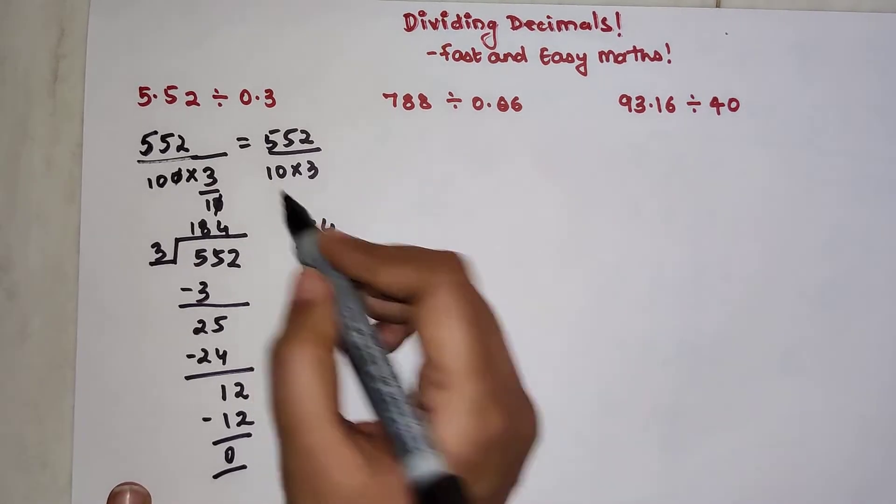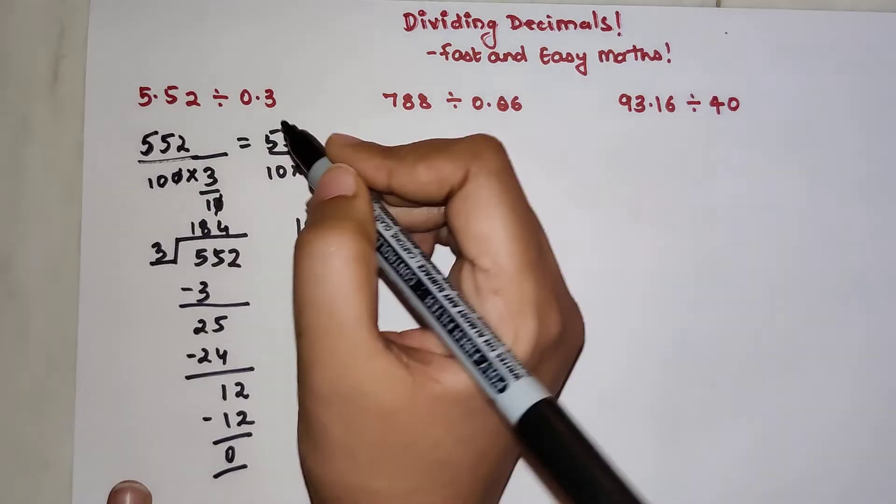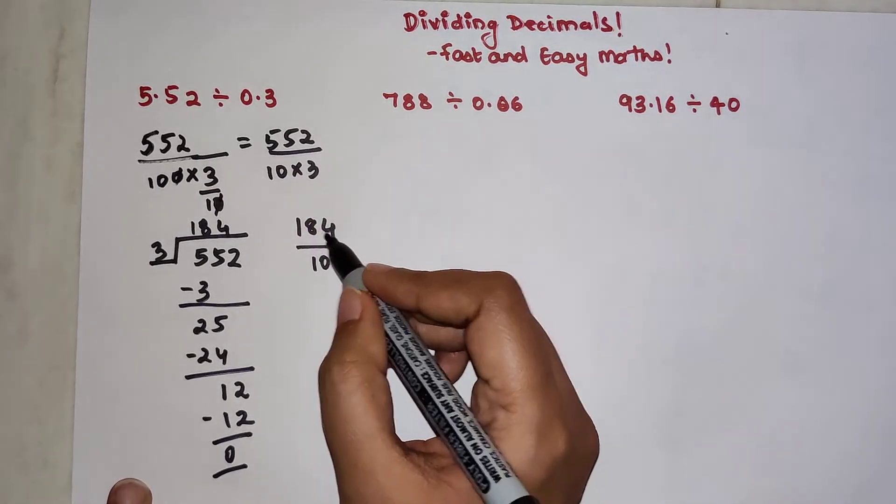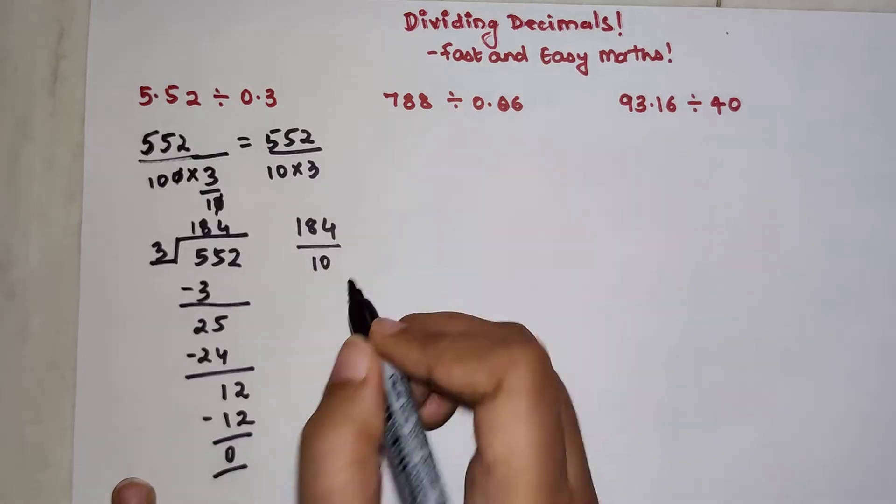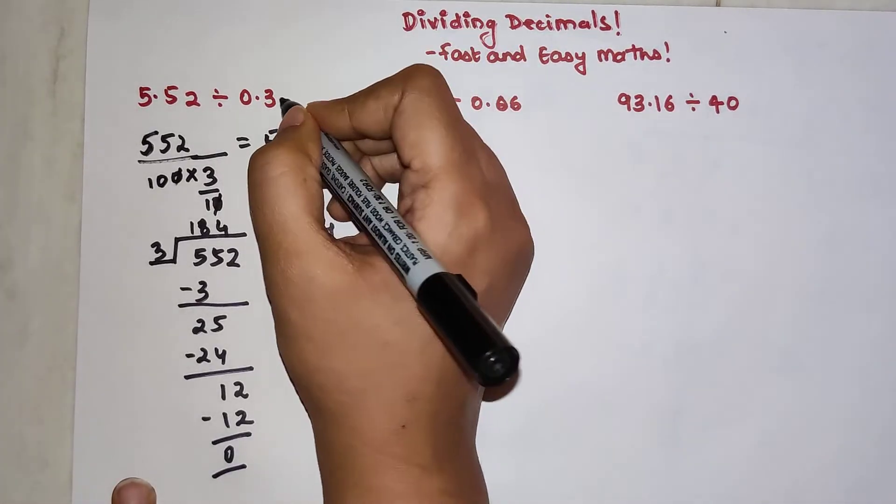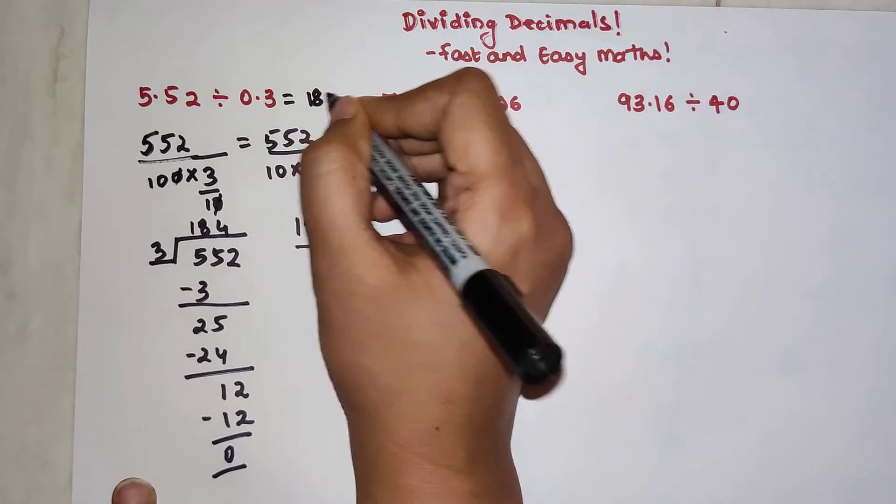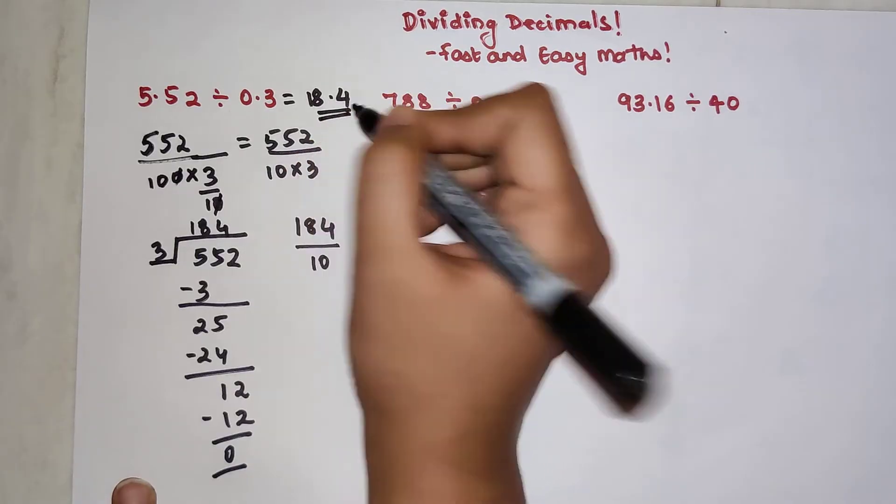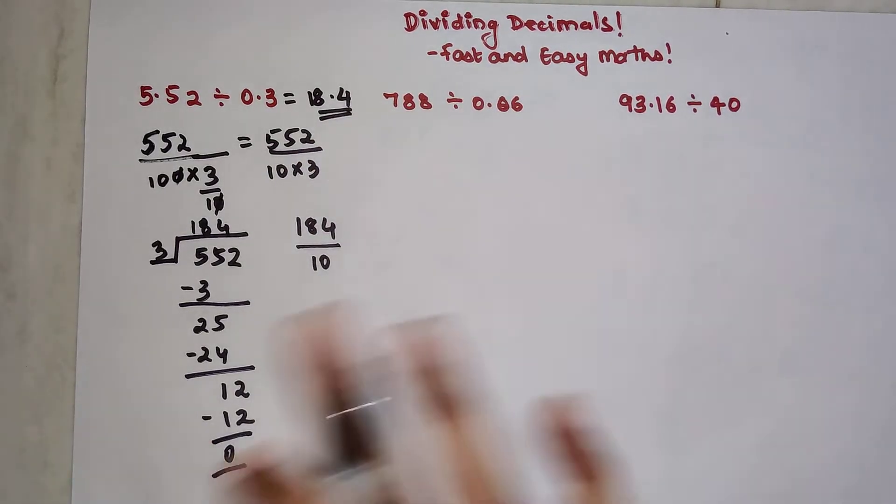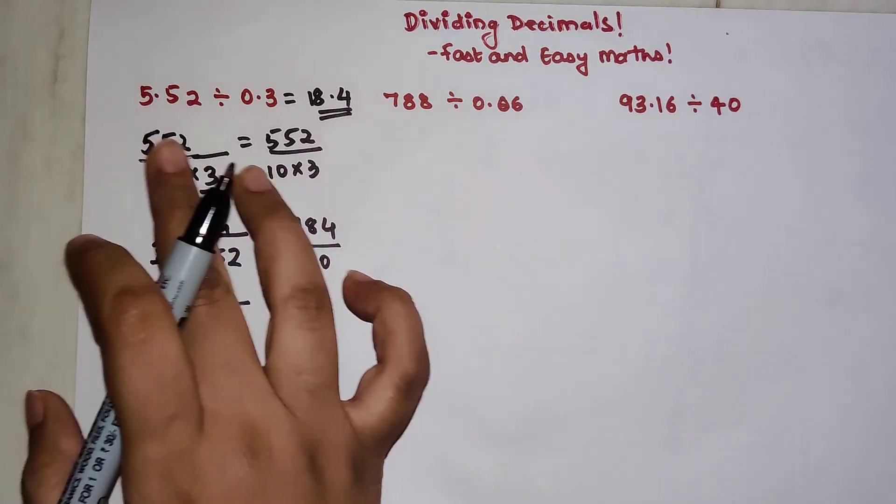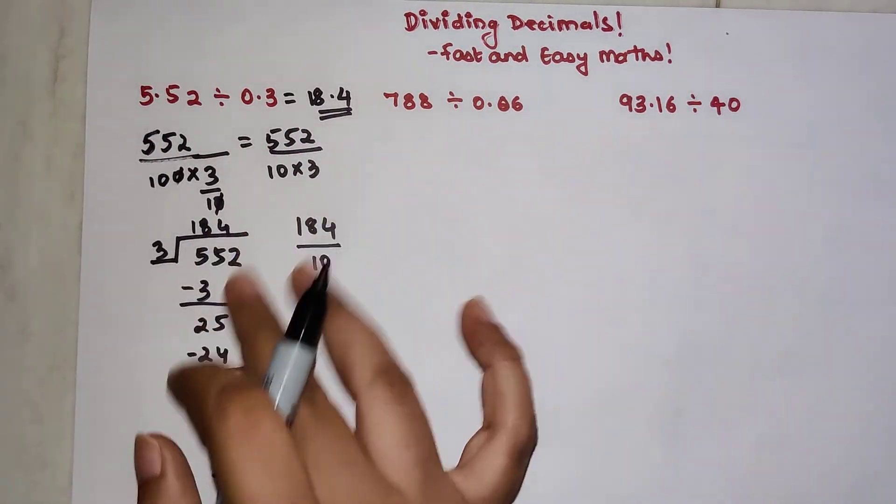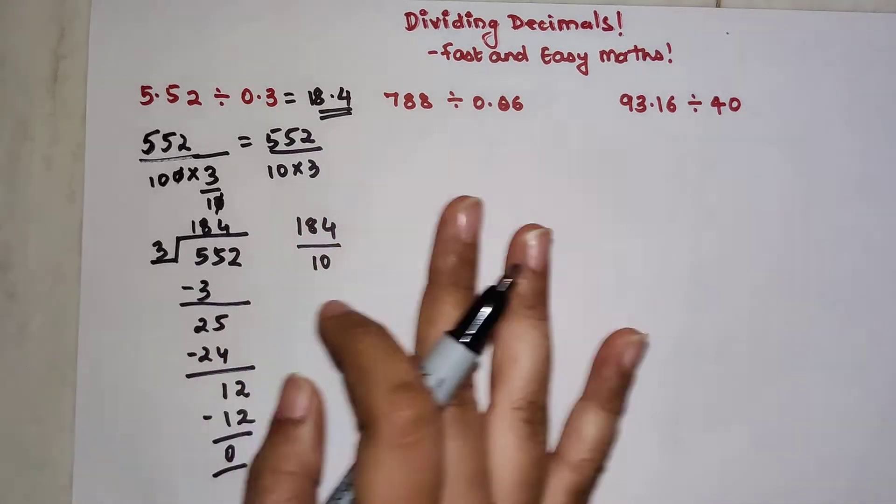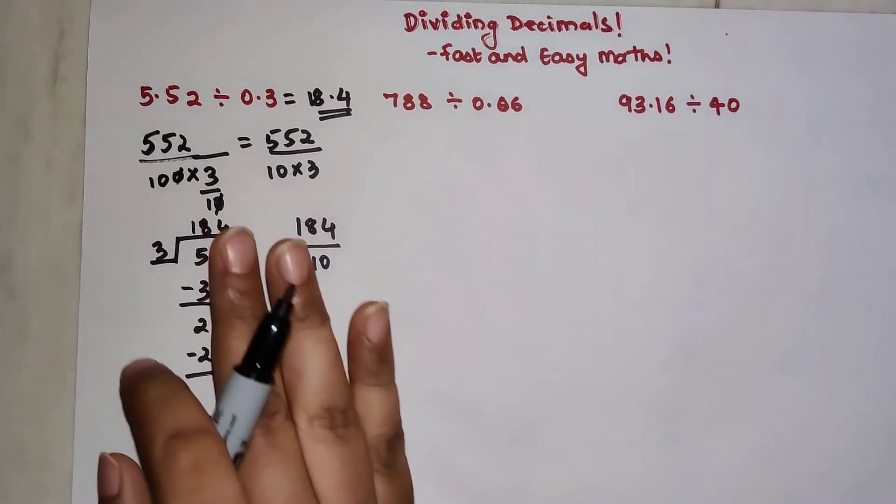So the answer is 184, but it's not the actual answer because we have this 10 to be taken care of. Dividing any number by 10 is just so simple, you just have to put the decimal point. So the final answer we can write this as 18.4. So you saw how easy this entire thing became. Imagine if you had to divide this and count the decimal places and all that. Don't do that. This is like a foolproof method.